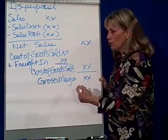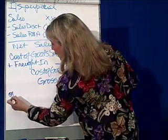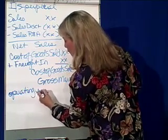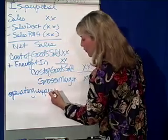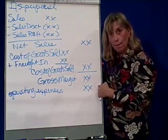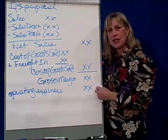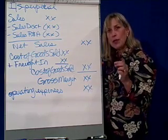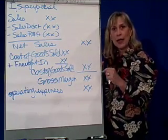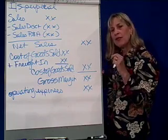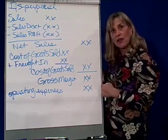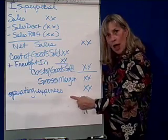The next portion is what's called your operating expenses, also known as selling, administrative, and general expenses. Now, we talked about FOB destination — FOB destination says that the seller pays the freight. So if the seller pays the freight, then it's a selling expense, and a selling expense goes down here in operating expenses, because the other name for operating expenses is selling, administrative, and general.